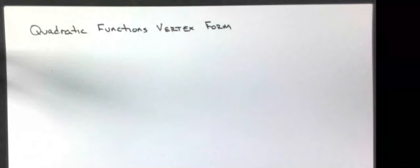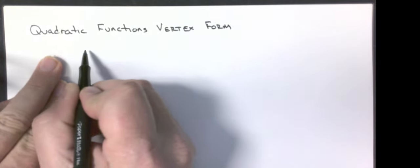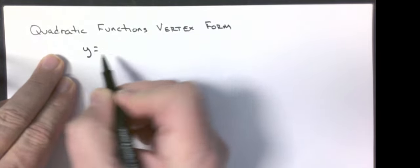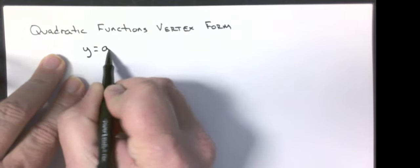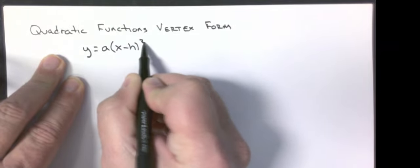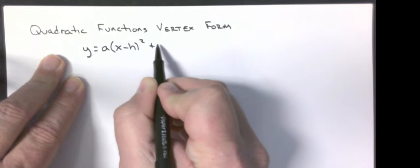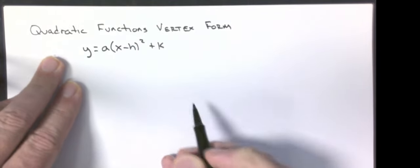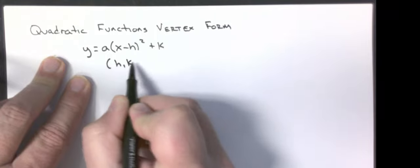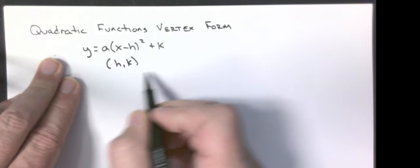Our next topic is quadratic functions in vertex form. A quadratic function in vertex form looks like y equals a times x minus h quantity squared plus k, where the point (h, k) is the vertex.